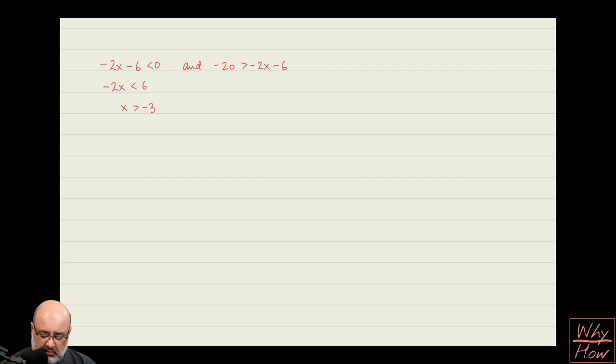Now when we try to solve the other one, there's a bunch of different ways to do this. I can move the 2x to the left and I can move the negative 20 to the right. And if I do that, that makes it 2x is greater than negative 6 plus 20, which gives me 2x is greater than 14, which means x is greater than 7. Divide both sides by 2. Now we do not have to change the direction of the inequality here because I did not divide by a negative number, like I did in the problem on the left side.